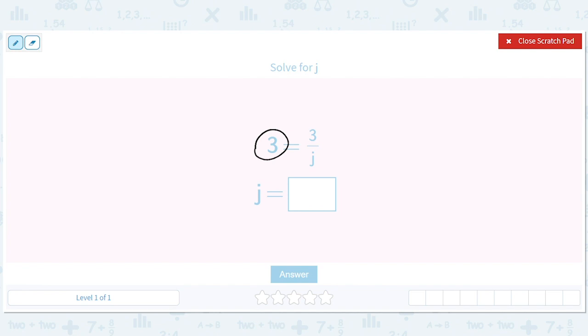So the first step here would be to make this look like something we can cross multiply. We don't have to do that. We can multiply both sides by j, but let's just multiply both sides by j. Let's not do the cross multiply thing. So we're going to multiply by j. We're going to multiply by j. That's going to cancel these out.